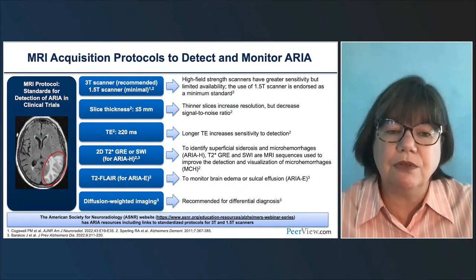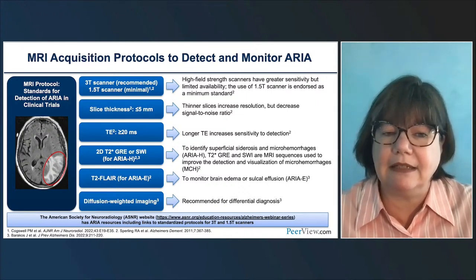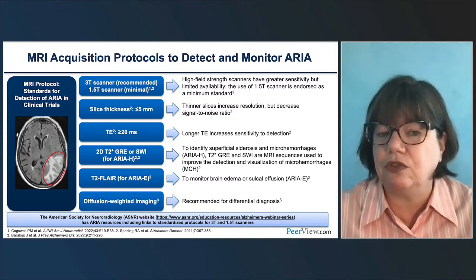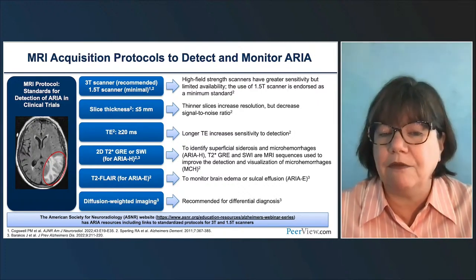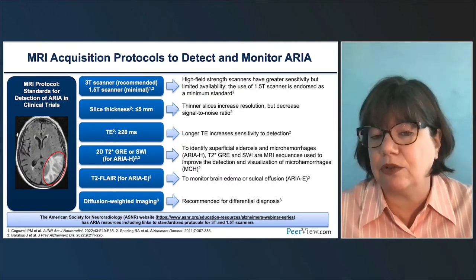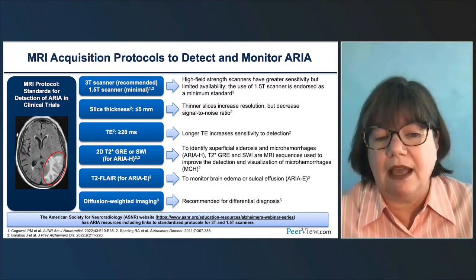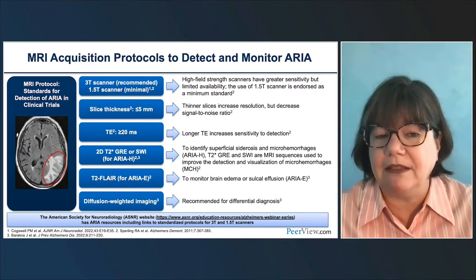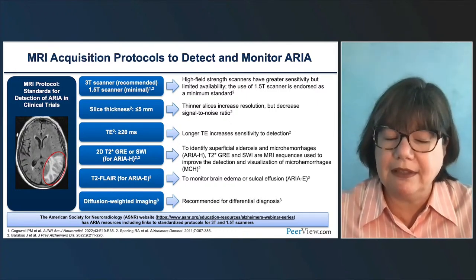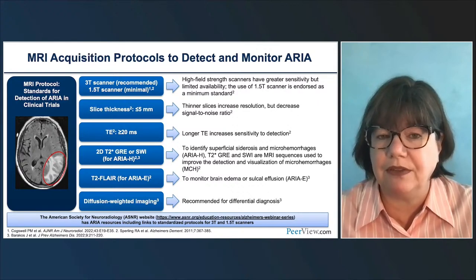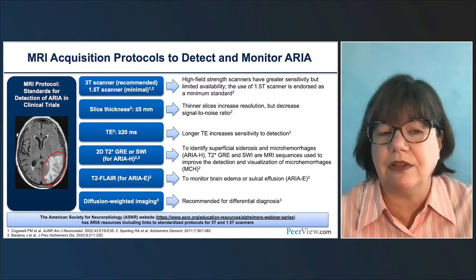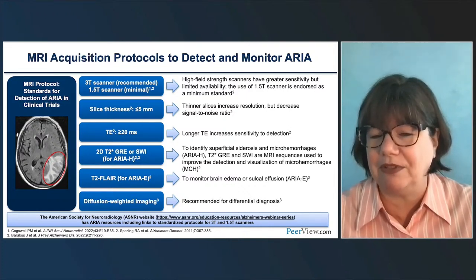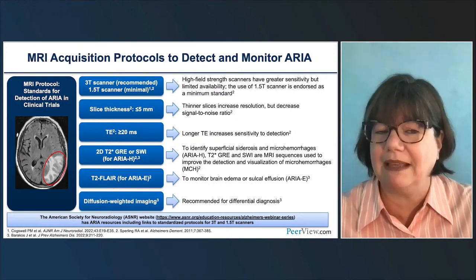The most important thing to be consistent with is detecting microhemorrhages. There are different techniques: traditional T2-star type techniques, or more modern techniques such as susceptibility imaging—SWI or SWAN on other platforms. We use FLAIR for edema and effusions, and diffusion for the recommended differential diagnosis. The American Society for Neuroradiology has done a project with Siemens, GE, and Philips to set standard protocols at 3T and 1.5T. Links to the ASNR website will be in your materials so you can download those protocols directly for your scanner.